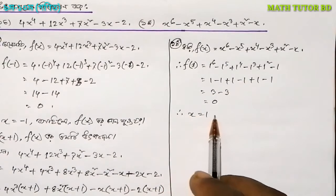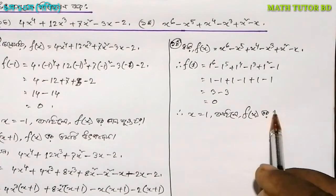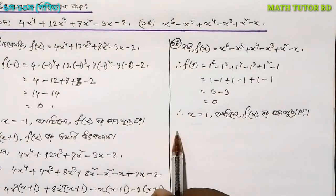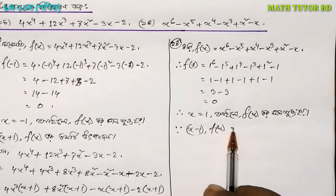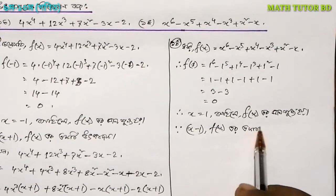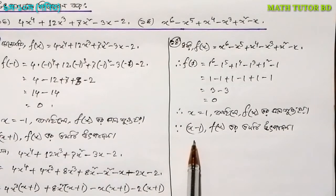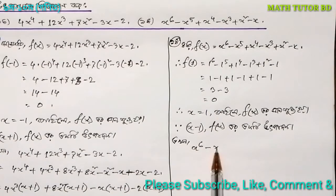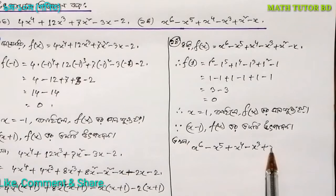So x equals 1, when substituted, gives function of x equal to zero. Therefore x minus 1 is a factor — x minus 1 is a factor of x to the power 6, minus x to the power 5, plus x to the power 4, minus x cubed, plus x squared, minus x.